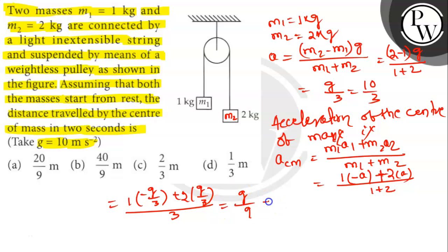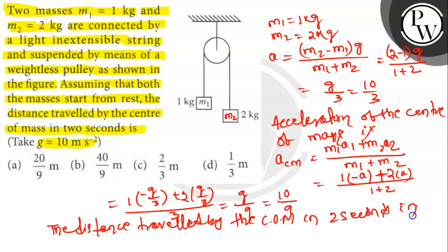Since A is g by 3, this becomes g by 9, or 10 by 9. The distance travelled by the centre of mass in 2 seconds, S, is